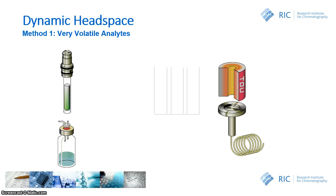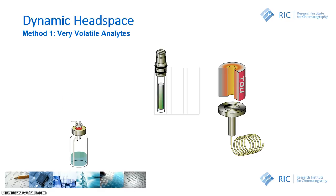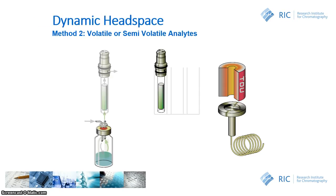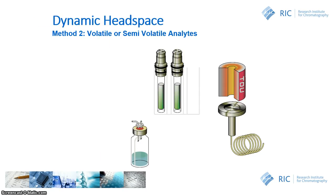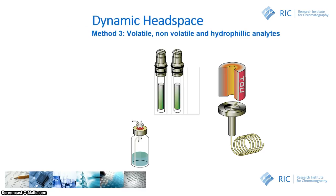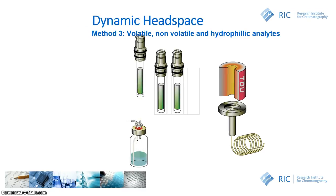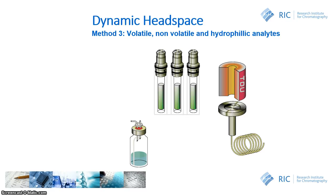For the trapping of very volatile analytes, a dedicated TDU trap is used in the first step. After the headspace sampling, a second dynamic headspace step is performed with a second trap dedicated for volatile and semi-volatile compounds. A third tube is used to trap volatiles, non-volatiles, and rather hydrophilic analytes from the same sample.